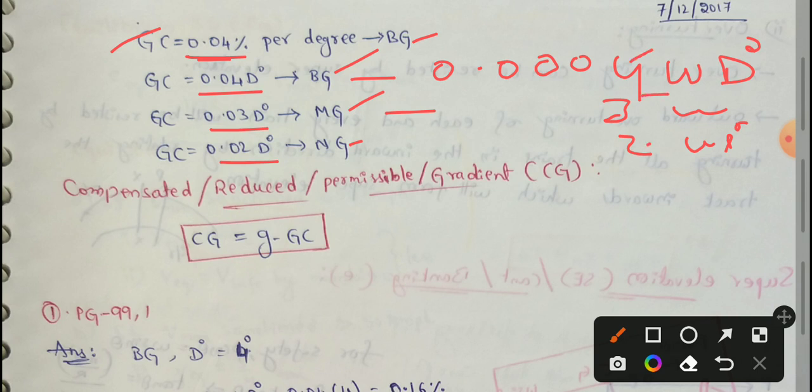Note that grade compensation and curve resistance formulas differ only in the number of zeros. Here W is the weight of the train and D degrees is the degree of curve.